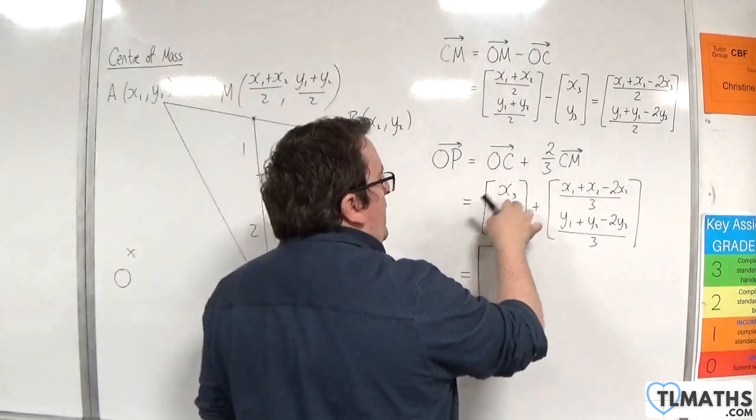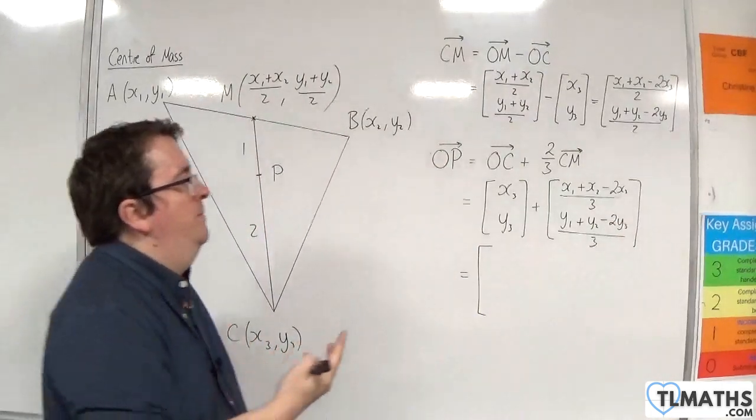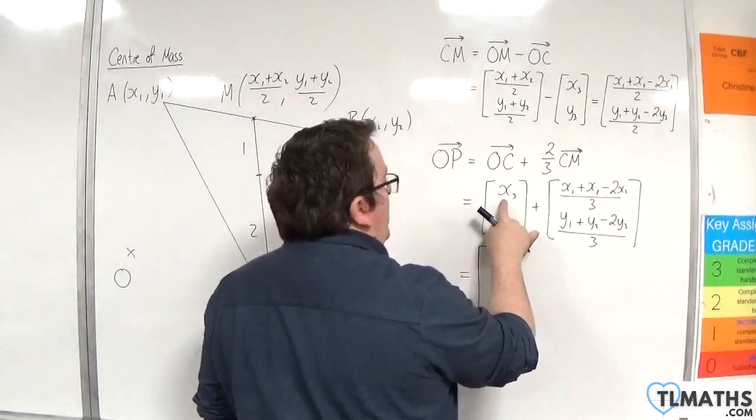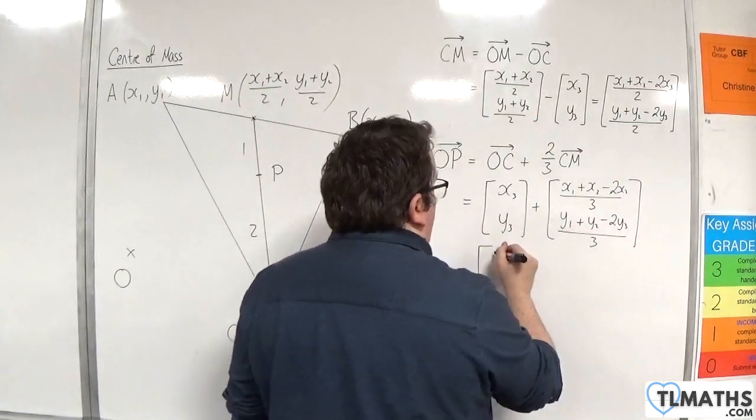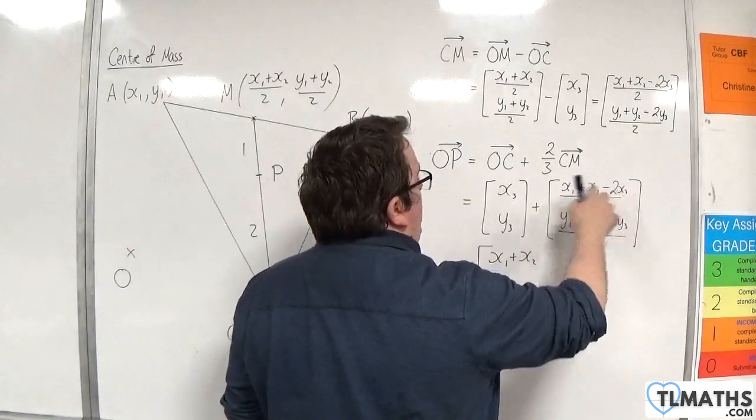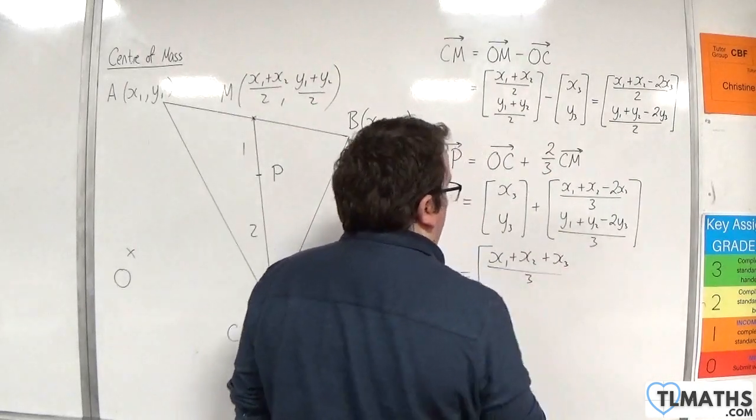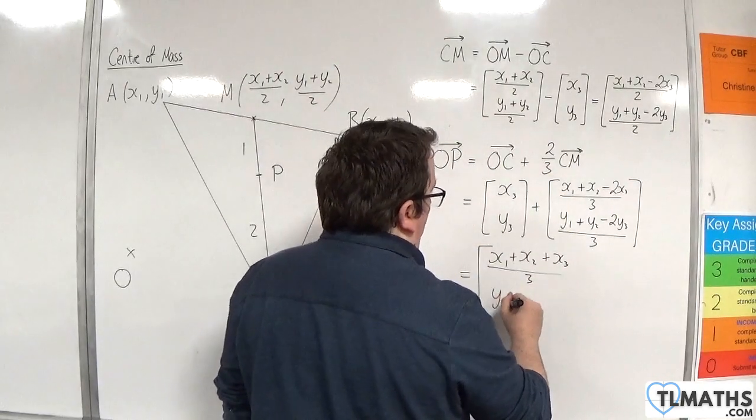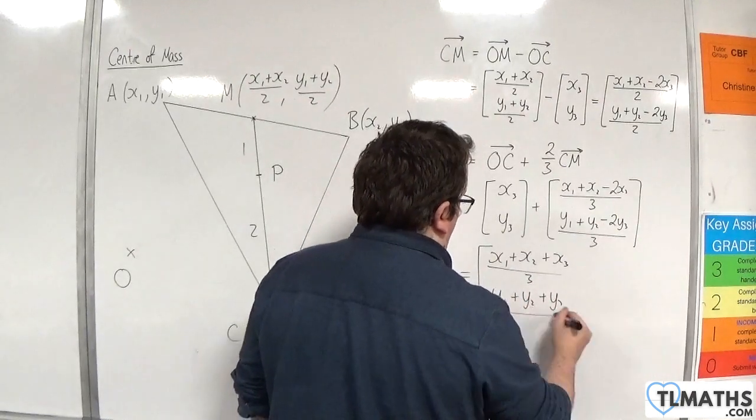So, I've got X3 and I want to add it to this fraction. So, I'm going to write it as a single fraction. So, this would be 3X3 over 3 plus this. So, I'd have X1 plus X2. Take away 2X3 plus 3X3 would be just plus X3. And likewise, I'd have Y1 plus Y2 plus Y3 over 3.